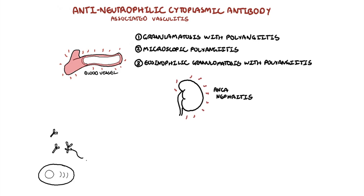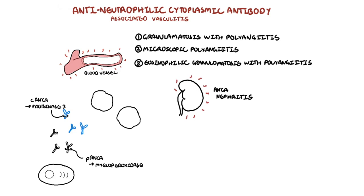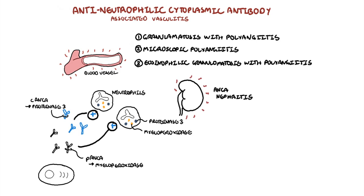There are two types of antibodies found in ANCA. These include P-ANCA, which are antibodies directed against the neutrophil enzyme myeloperoxidase — the P is for perinuclear — and the second antibody is C-ANCA, the C for cytoplasmic, and these antibodies are directed against neutrophil proteinase 3. ANCA may play a direct role in vessel damage by hyperactivating already-primed neutrophils, leading to vessel endothelial inflammation and damage.